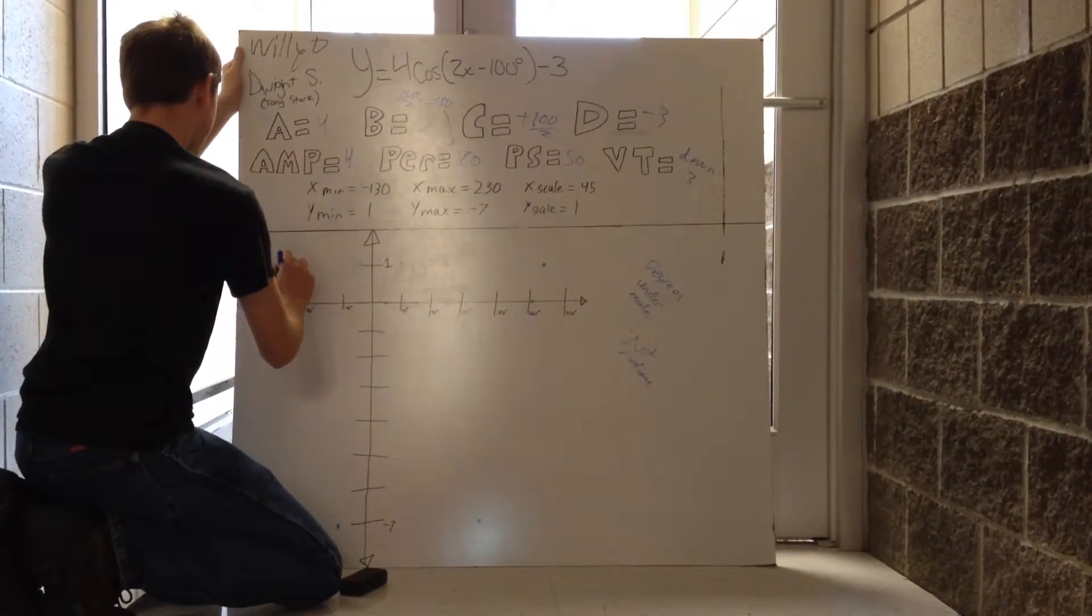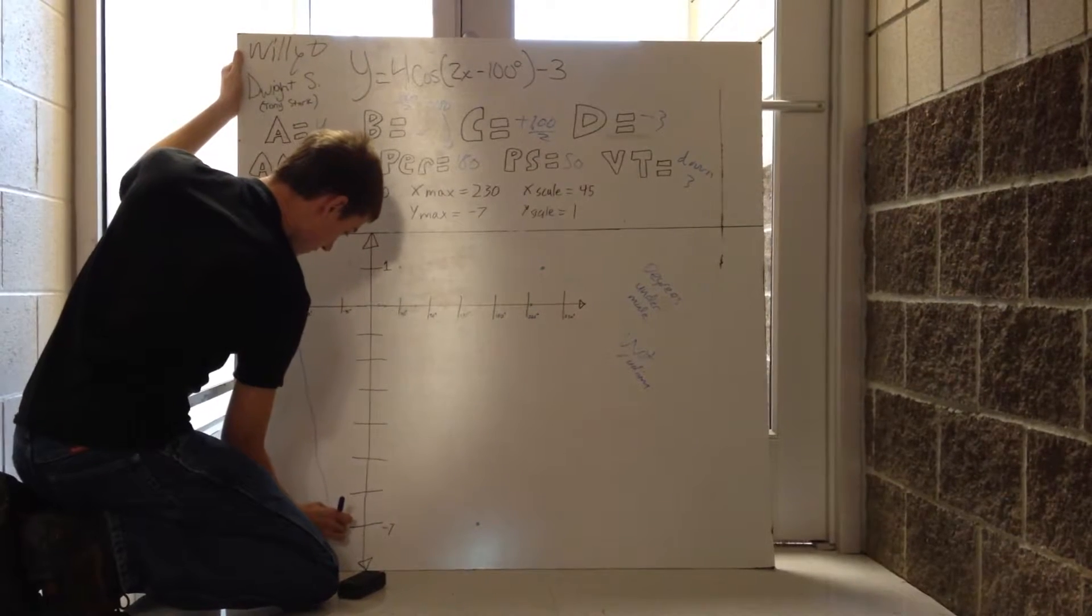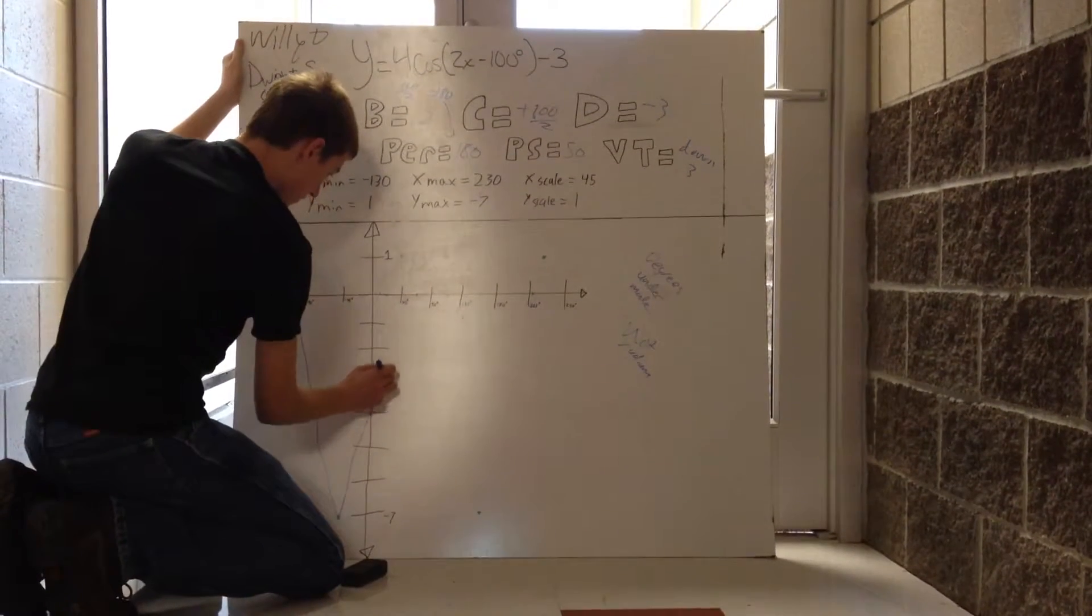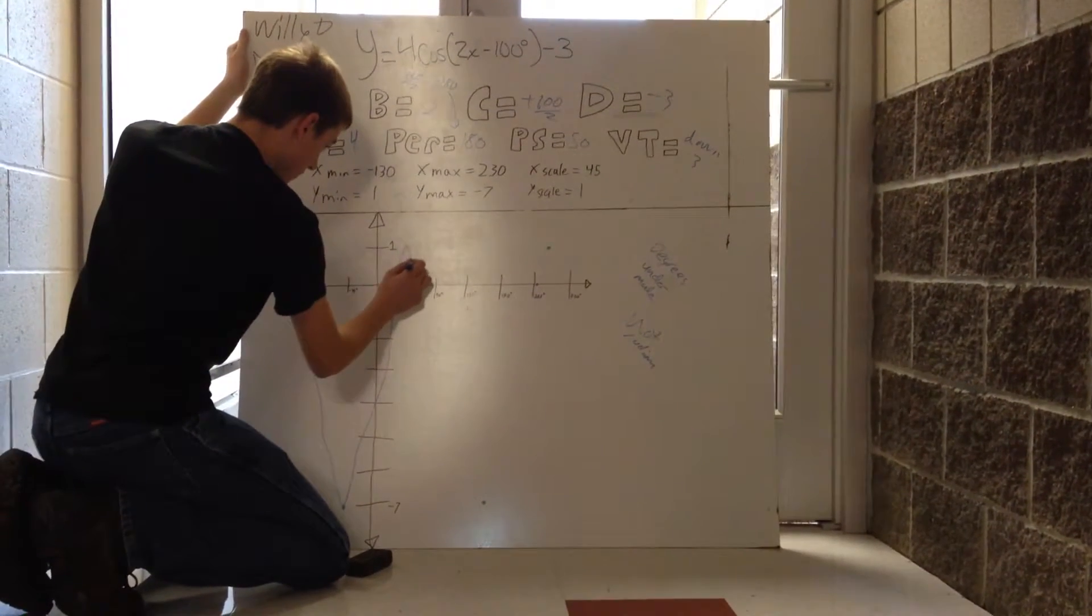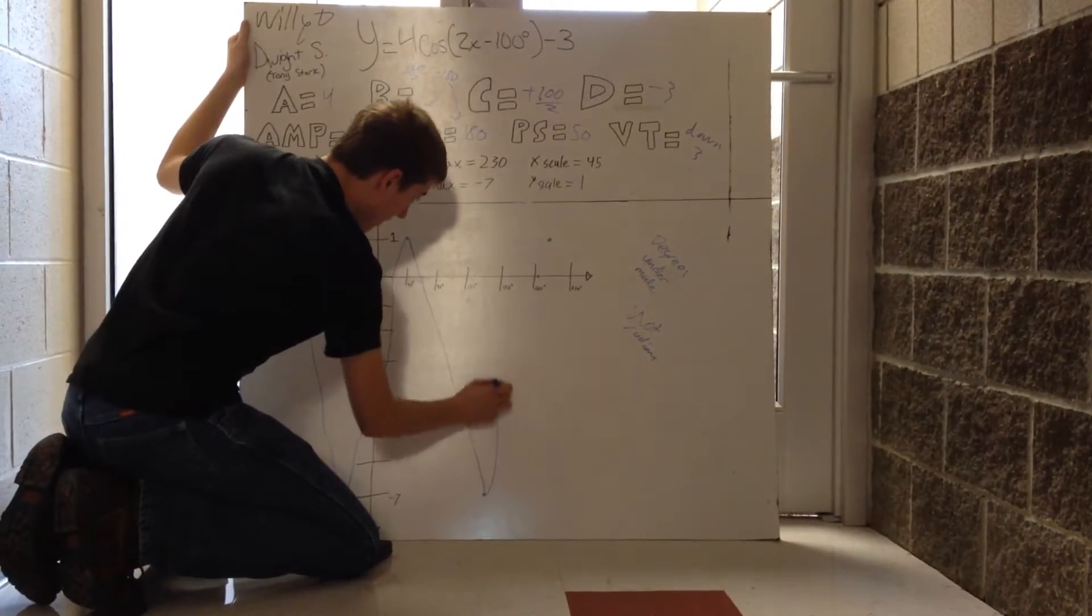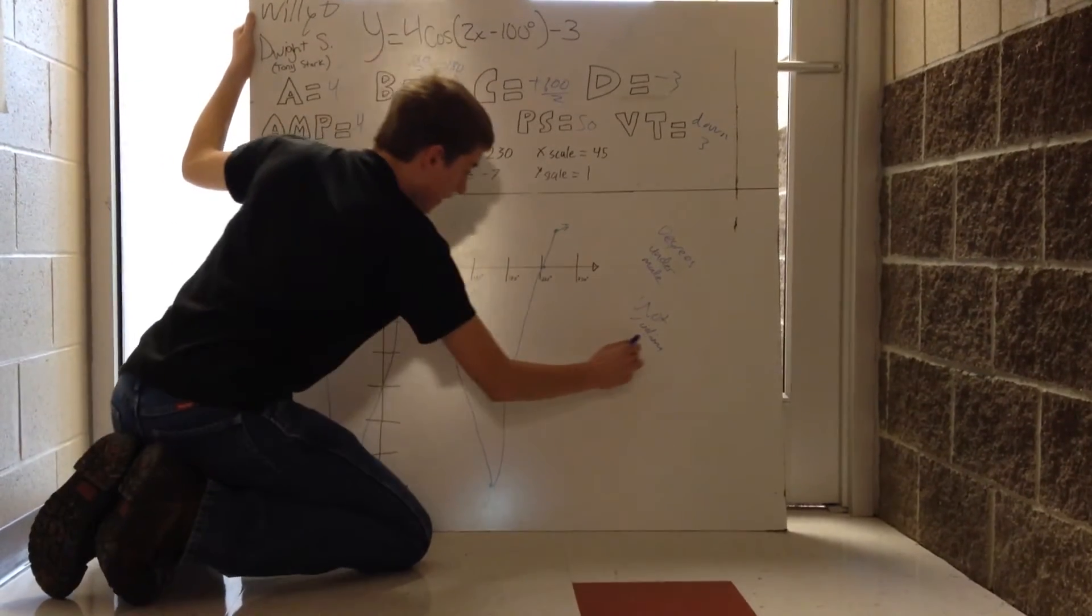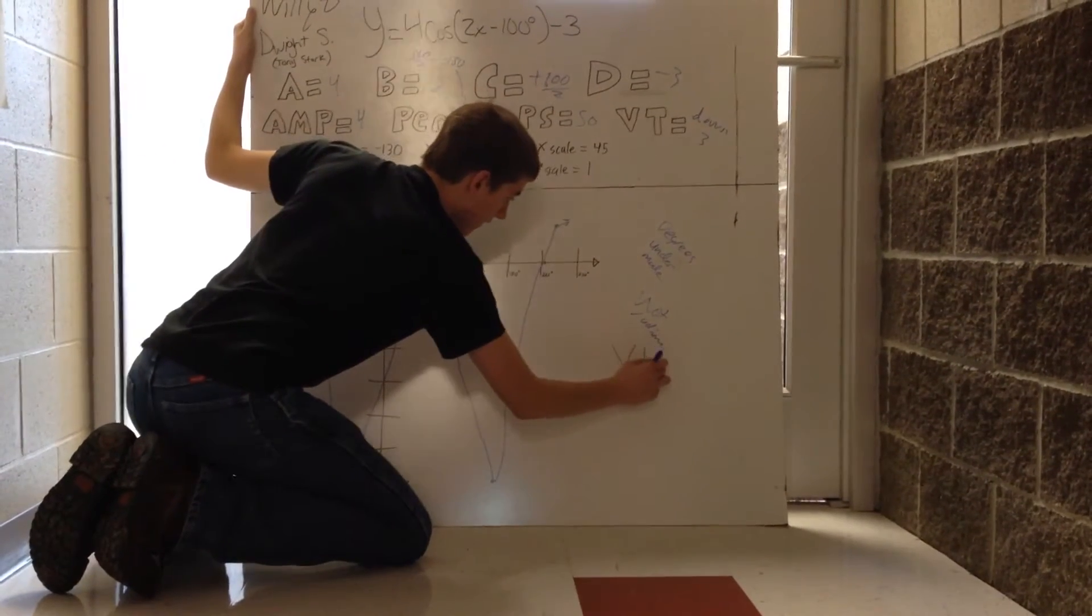So take your graph and just connect the dots. Try to make them, whenever you connect the dots, curved, because these graphs are not nice and straight. They aren't V's, they're curved.